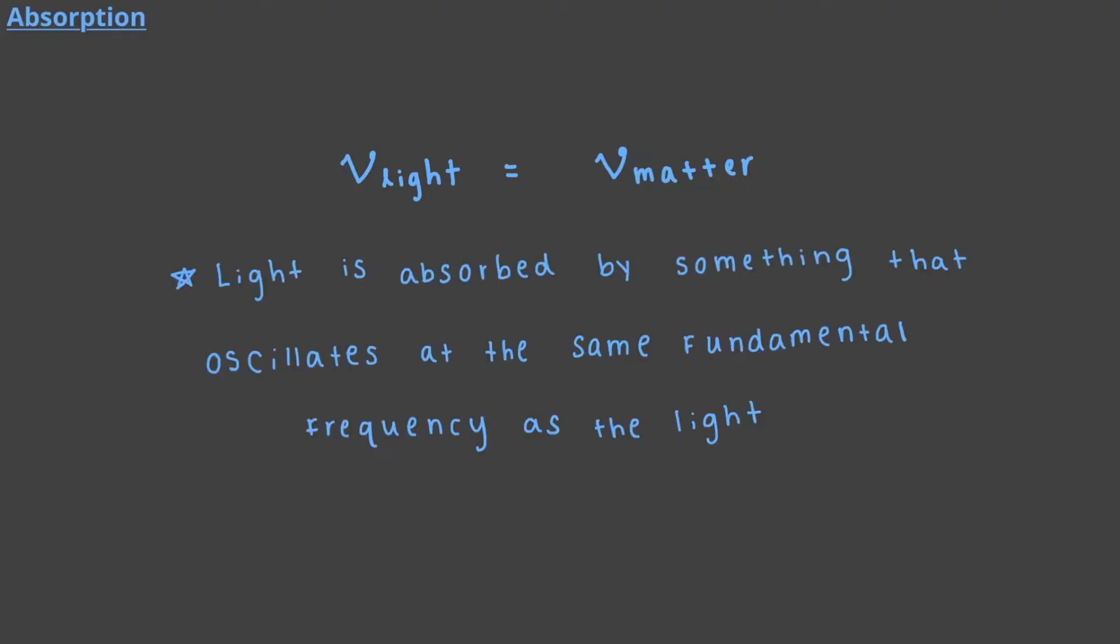Light and matter only interact when the frequency of light is in resonance with the frequency of matter. In other words, light is absorbed by something that oscillates at the same fundamental frequency as the light.